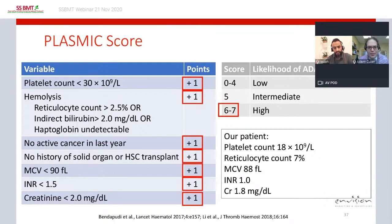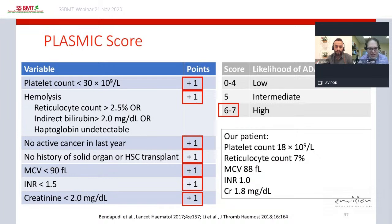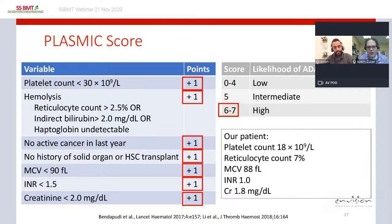Calculating her PLASMIC score, she earns points for all seven criteria: platelet count less than 30,000, markers of hemolysis, no cancer or transplant history, MCV less than 90, INR less than 1.5, and creatinine less than 2 — giving her a high likelihood of TTP. However, the sensitivity of a PLASMIC score of 6 or higher is only about 89%, so we still need ADAMTS13 testing to confirm the diagnosis while starting empiric treatment.